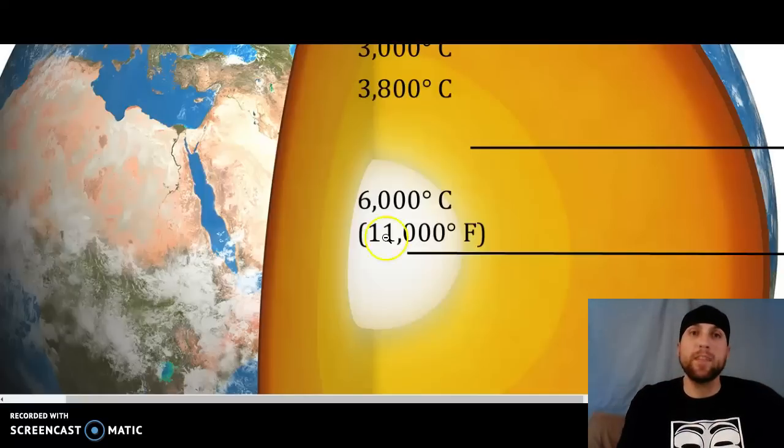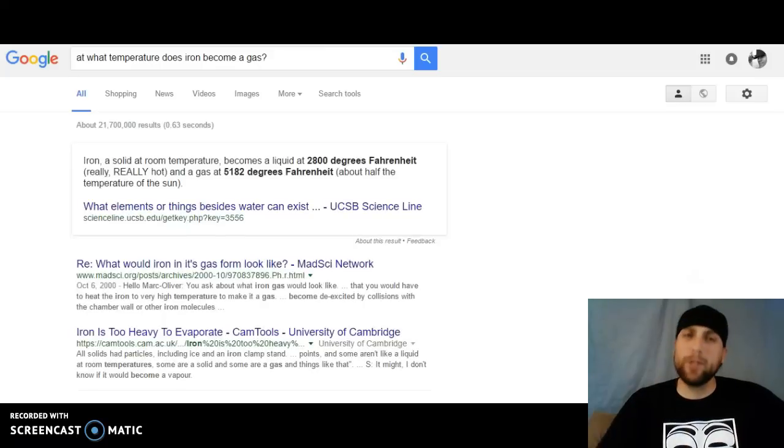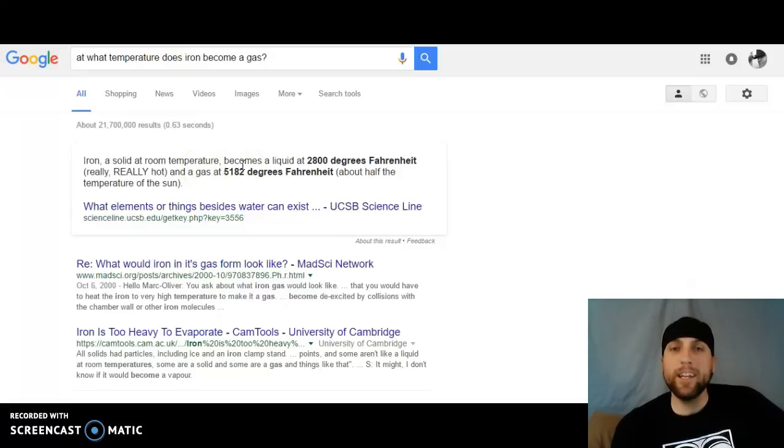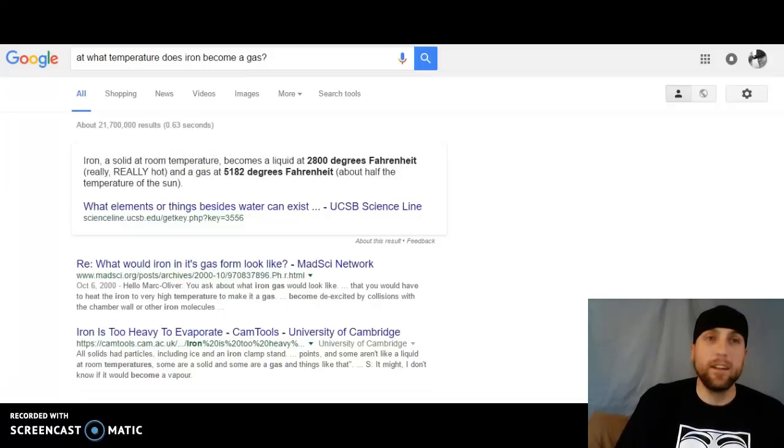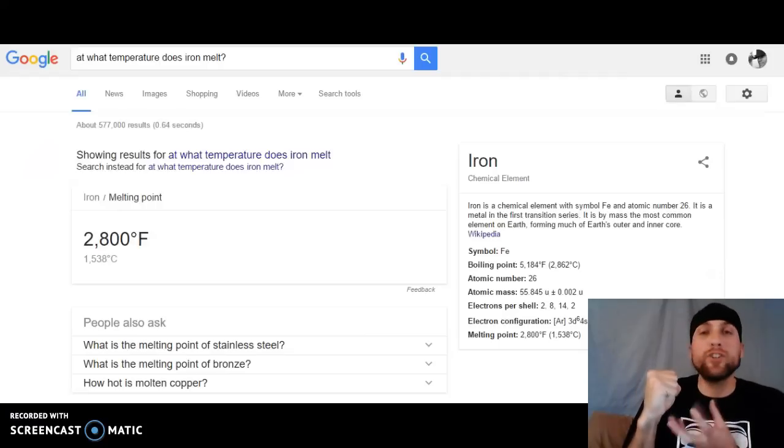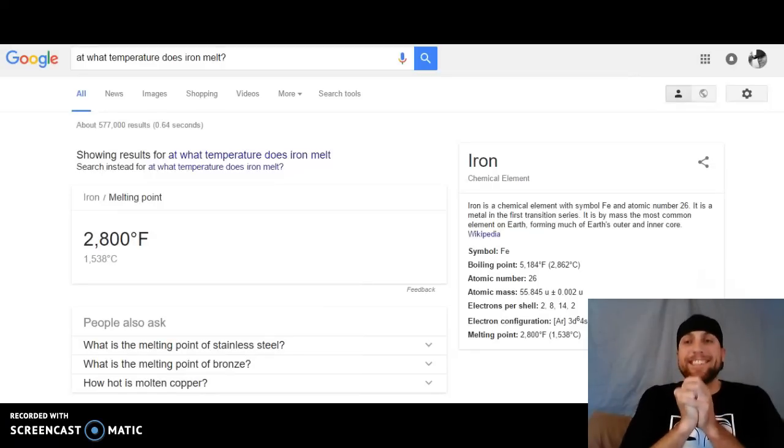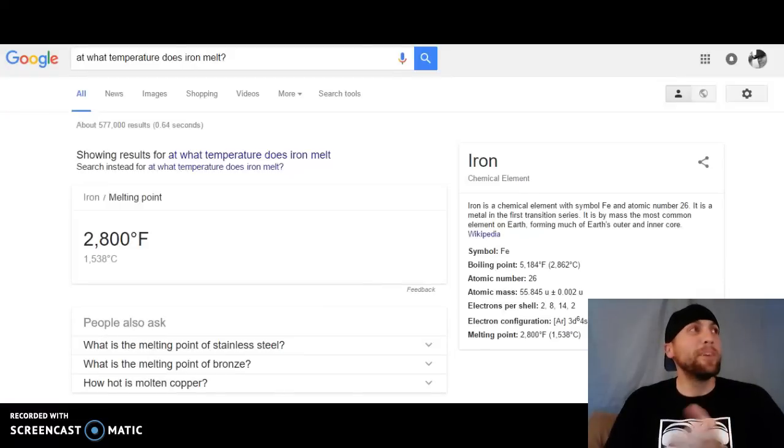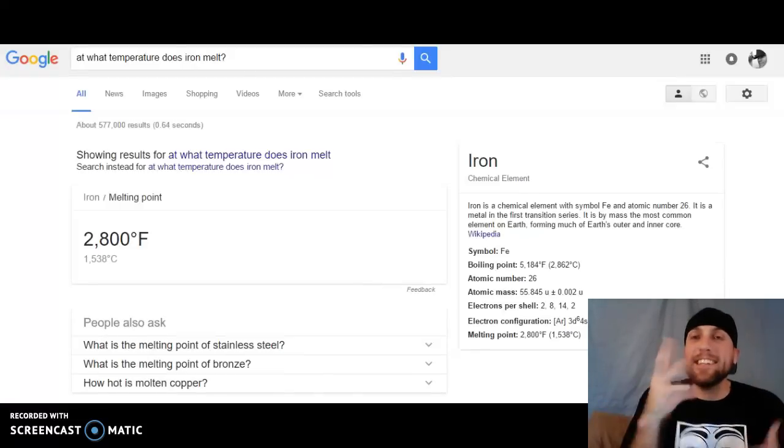But I have a question for you. I typed in 'at what temperature does iron go from a liquid to a gas?' Check this out. Iron becomes a liquid at 2,800 degrees Fahrenheit and a gas at 5,182 degrees Fahrenheit. So our core at about 11,000 degrees Fahrenheit is twice as hot as the temperature it takes to turn a gas form. So if it could turn into a gas form, why is it not just turning into gas?